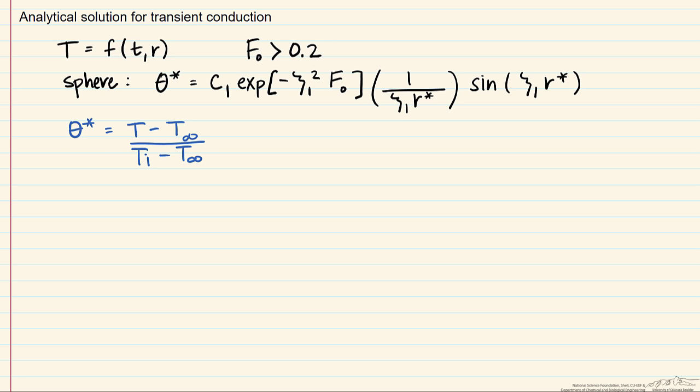And if you notice, unlike lumped capacitance, this T right here is not necessarily the centerline temperature. In lumped capacitance, the centerline temperature is the same as any other temperature within that radius at a certain time. Here, the temperature is a function of the position.